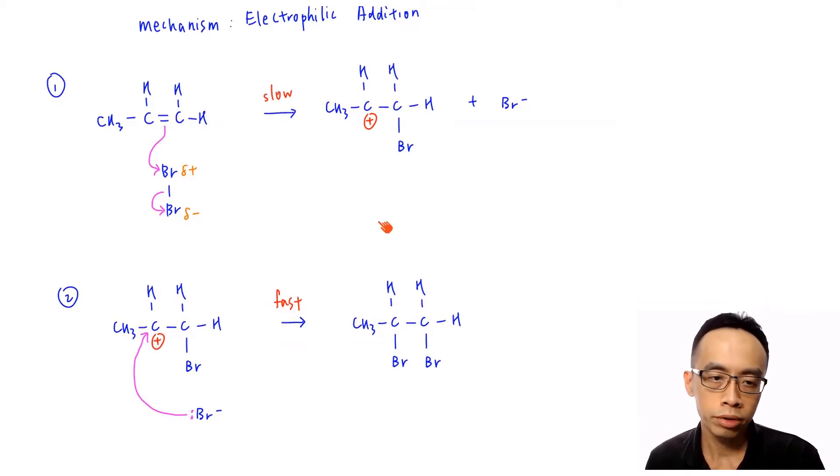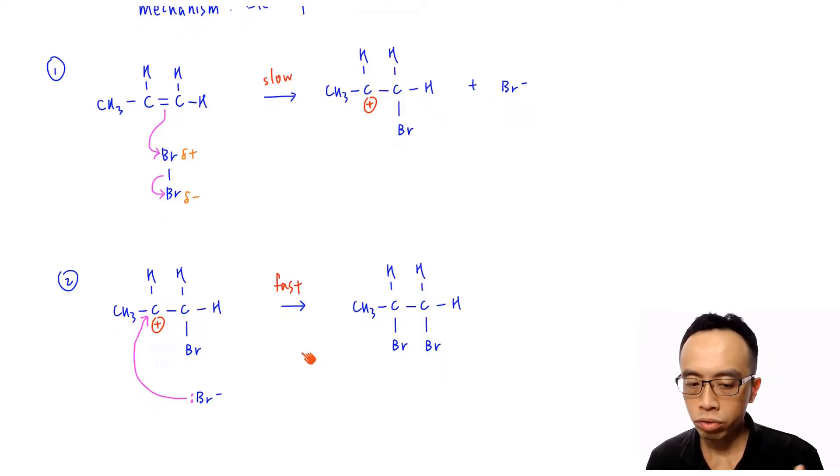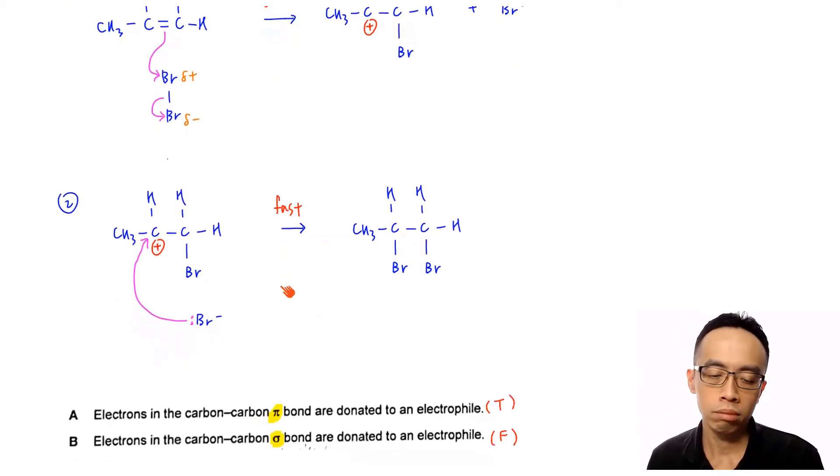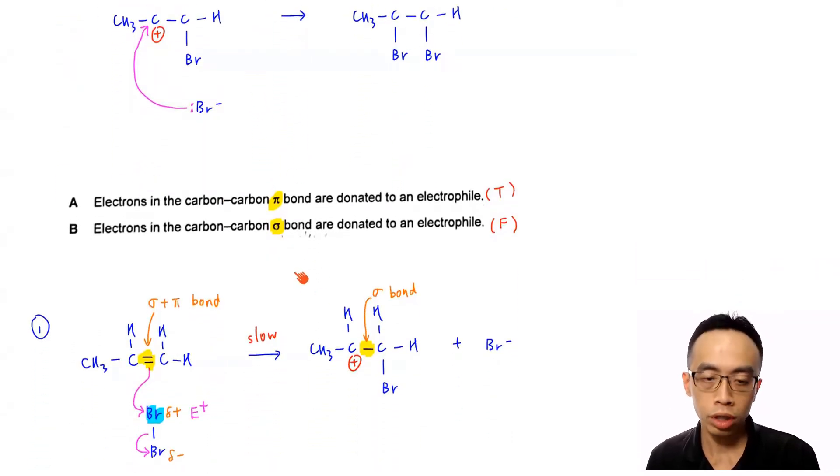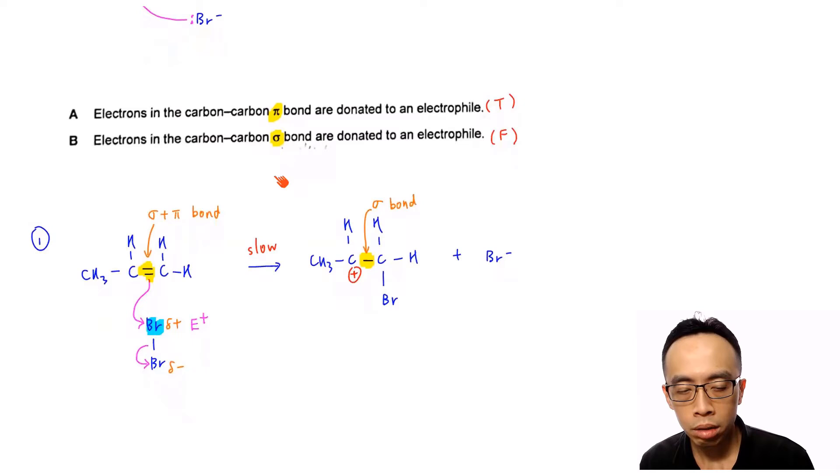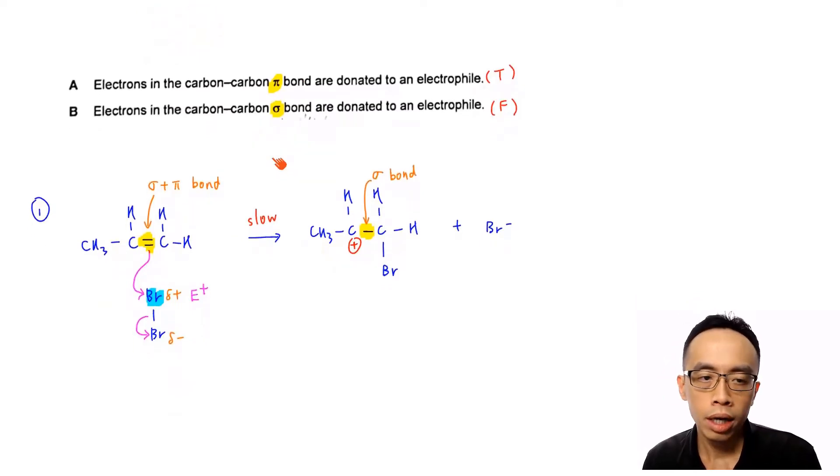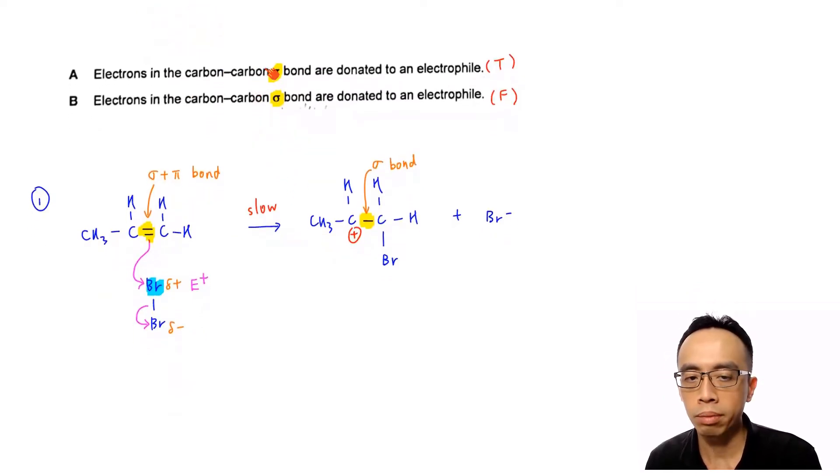Very simple process involving our alkene. Now let us run through the options, see which one of them are correct. So first one involving A and B. Now we can actually consider options A and B together because they are related to each other. A is talking about electrons in the carbon-carbon pi bond donated to an electrophile. B is talking about electrons in the carbon-carbon sigma bond donated to an electrophile. So which one of them is true?